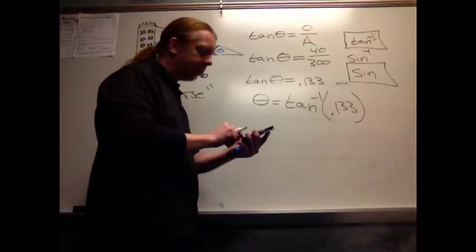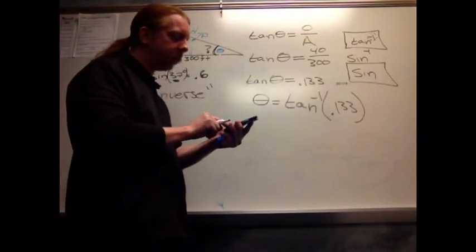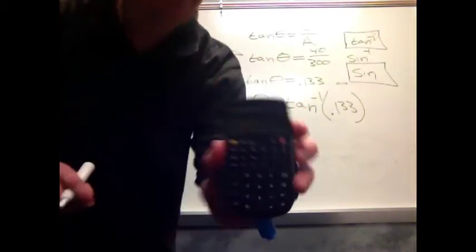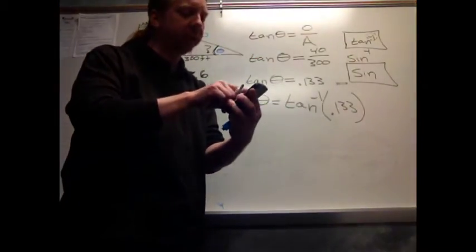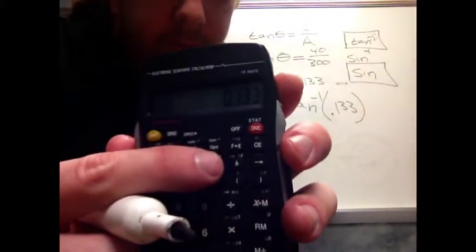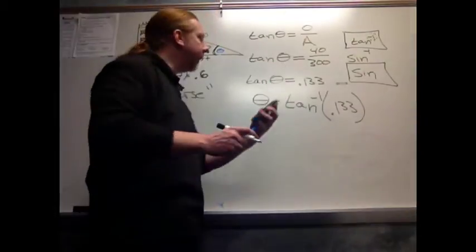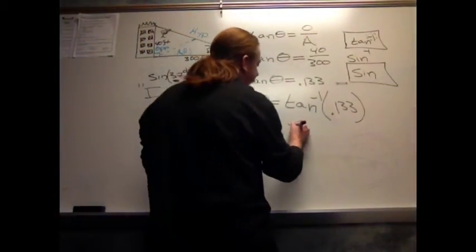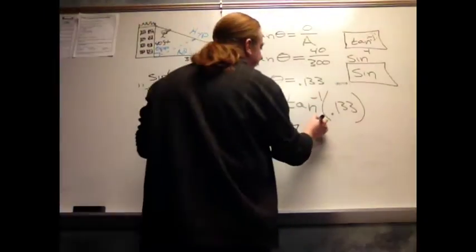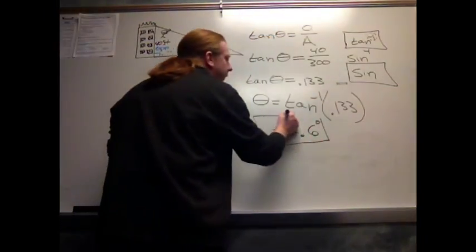So what I'm going to do is I'm going to take my calculator and then I'm going to type in .133. So I've got my .133 there. Then I'm going to push the second function button, and I'm going to push the tangent button. And then when I push that tangent button, it kicks out to me an answer of 7.6. And that will be my answer for 7.6 degrees.